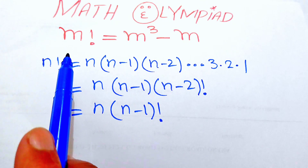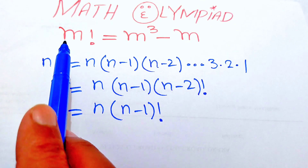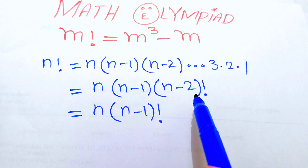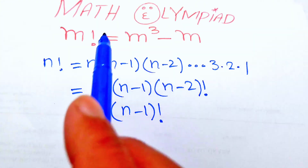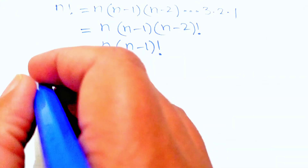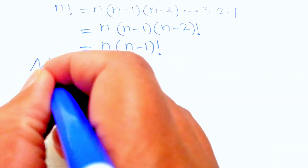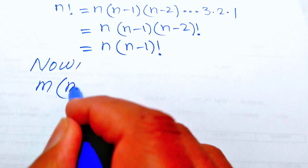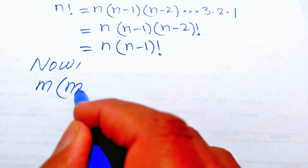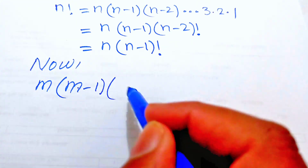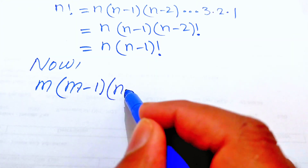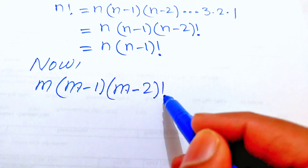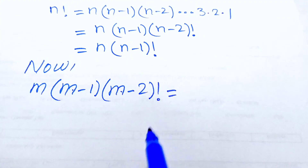We expand m factorial up to the (m minus 2) term. We write this expression as m times (m minus 1) times (m minus 2) factorial, and this whole expression equals the right-hand side.